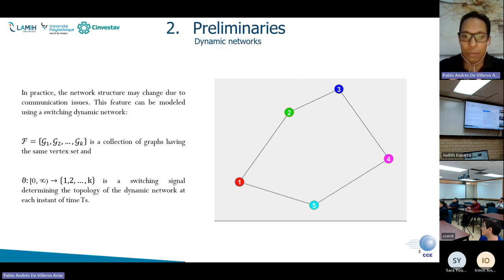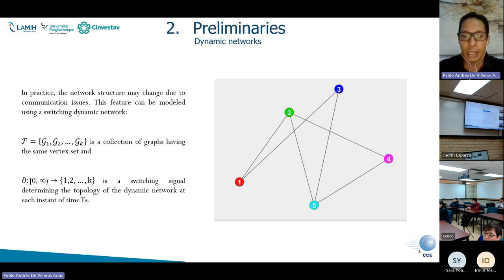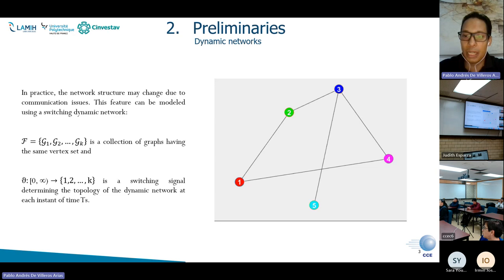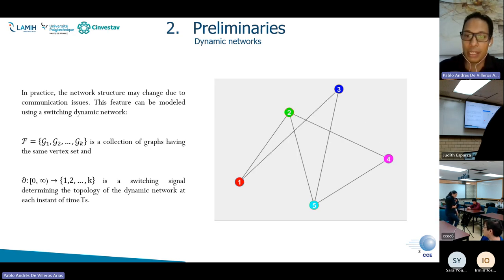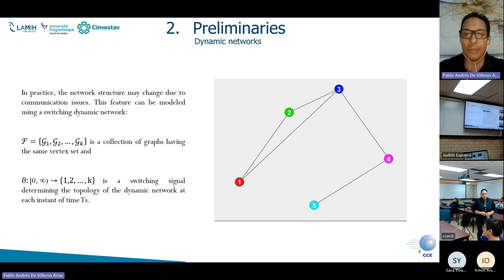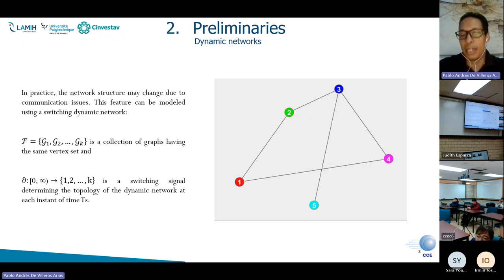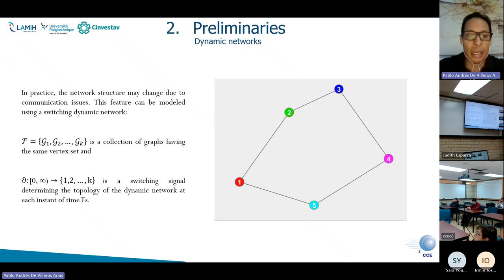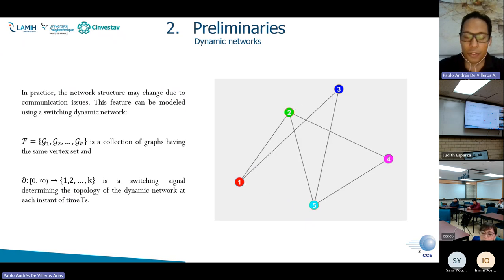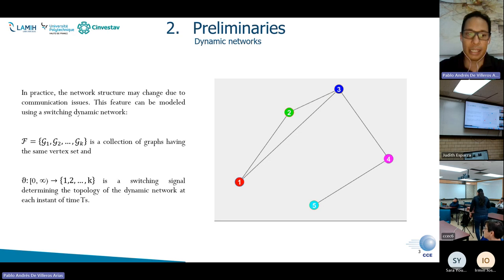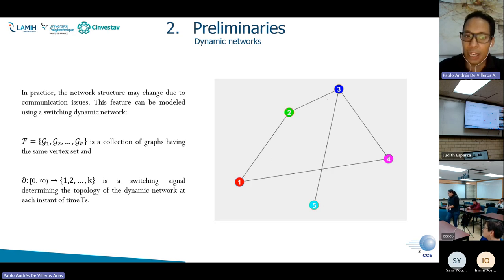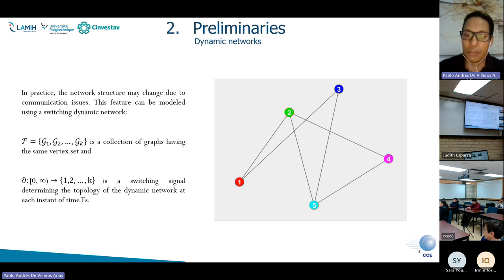Some basic concepts. The connectivity or connection between agents can be modeled using graphs. Sometimes, in network systems, you may see some changes in the communication. That's what we call dynamic networks or switching networks, as you can see on the right side of your screen. We represent that by a set of a finite number of graphs and an external signal that switches between these topologies.